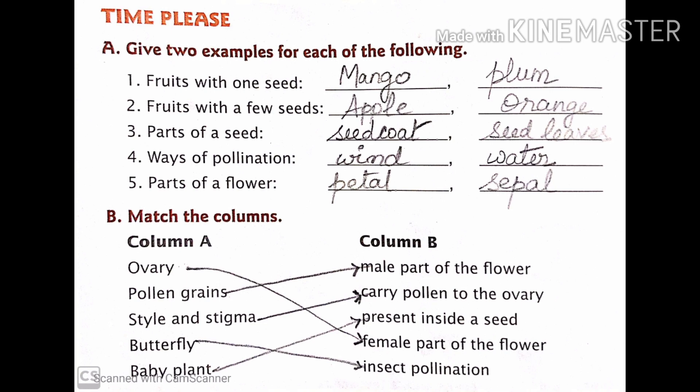Third, parts of a seed: answer seed coat and seed leaves. Fourth, ways of pollination: answer wind and water. Fifth, parts of a flower: answer petal and sepal.